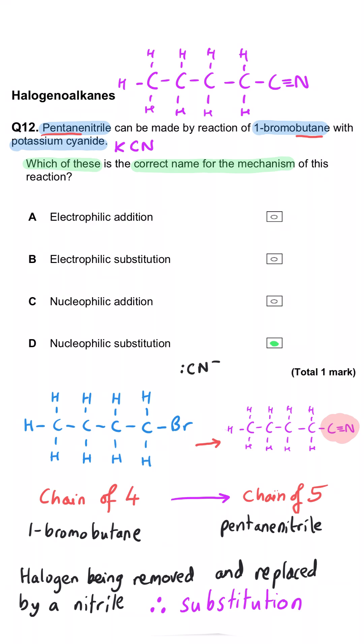The cyanide ion will attack the electron deficient carbon. The bromine to carbon bond will break and the bromine will leave, and then we'll end up with a longer chain with this nitrile functional group.